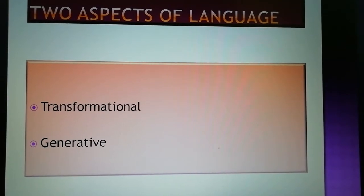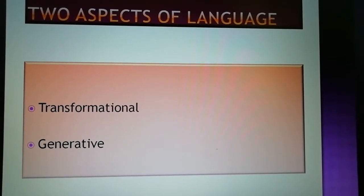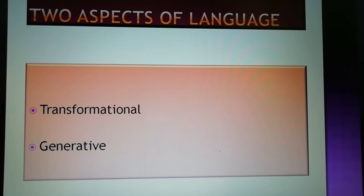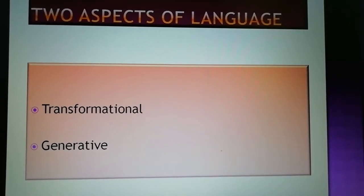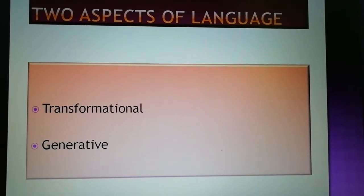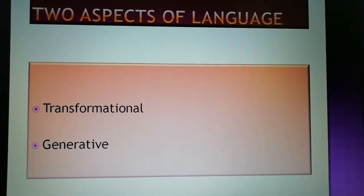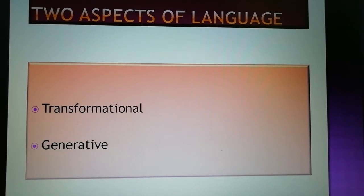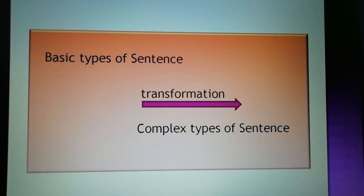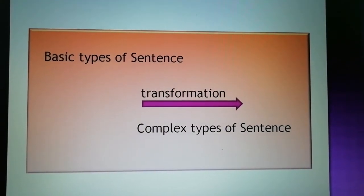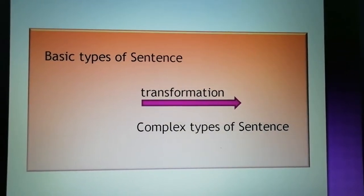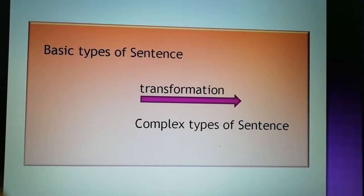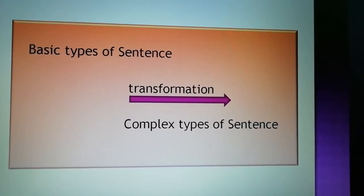Kernel sentences are the basic types of sentences which are active, simple, affirmative, and declarative. All other sentences are transformations of these basic types. Chomsky introduced Transformation Rules or T-Rules to explain transformations taking place in sentences. For example, a passive sentence is the transformation of an active sentence. Chomsky thus explained the relationship between sentences.